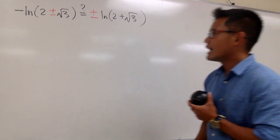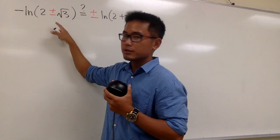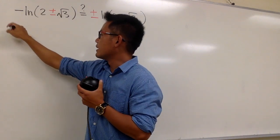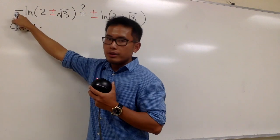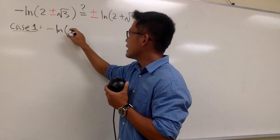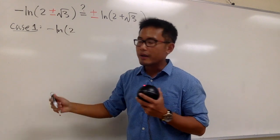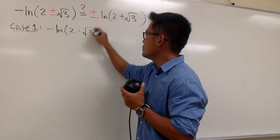Alright, let's go ahead and do that. We have two cases from the left-hand side, the plus and also the minus. So let me write it down. Here is case 1. Let me bring down the minus, and then we have the ln, and then inside we have 2. For case 1, let's put down the plus, so we have the plus only, and then of course we have the square root of 3.